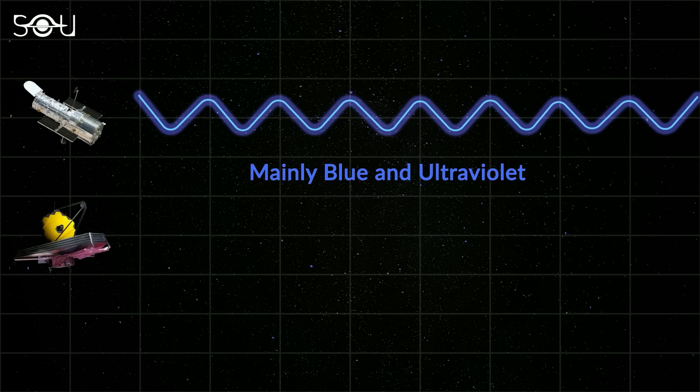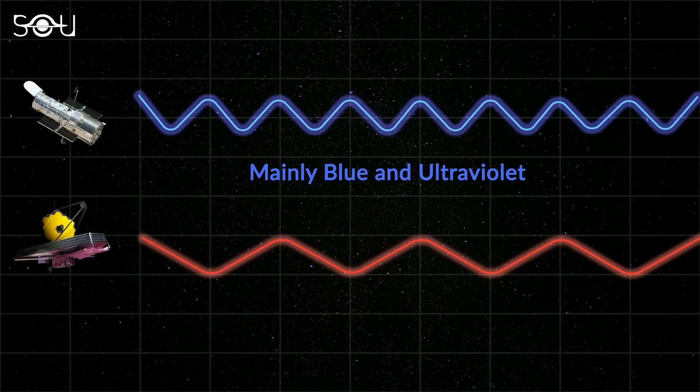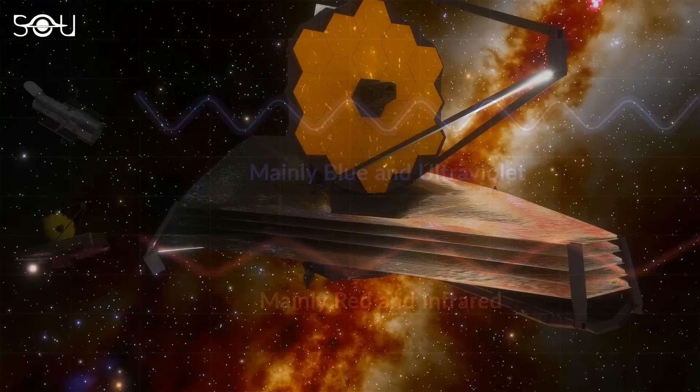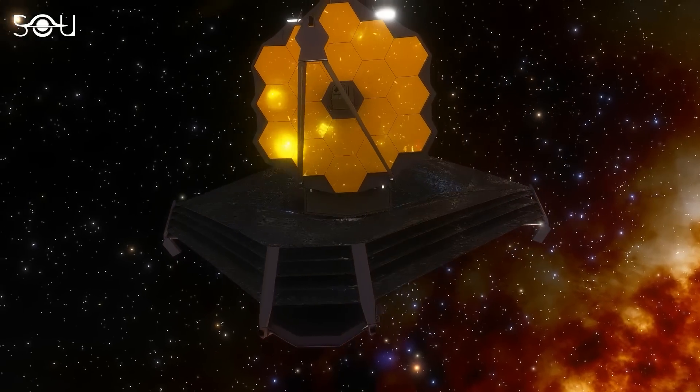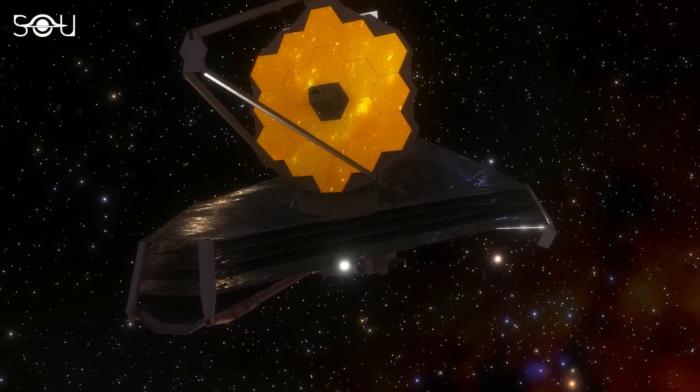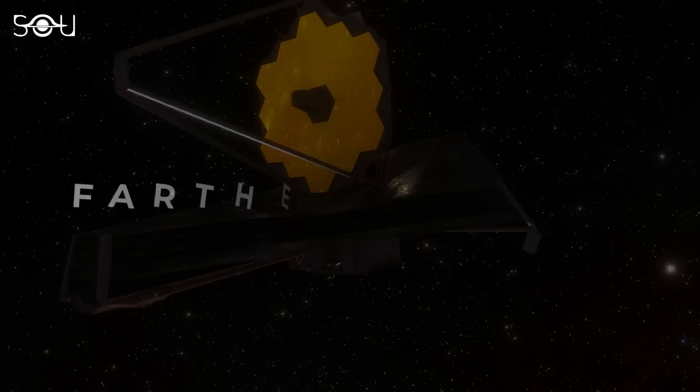However, the James Webb Space Telescope is an infrared observatory with giant primary mirrors, giving it an edge over the Hubble Space Telescope. So here are some of the Hubble records that Webb will surely break in its two decades of operations.